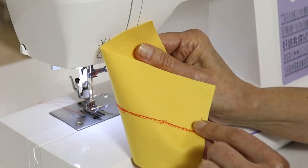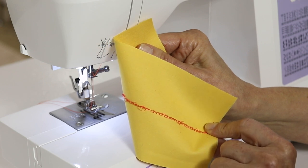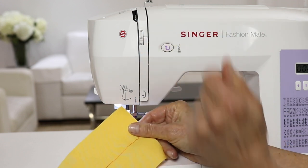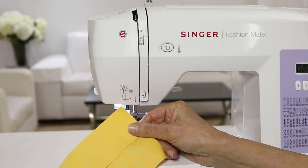When you sew, if the back of your stitching looks something like this, this actually means that your upper thread wasn't threaded correctly. So check your manual or your quick start guide and re-thread your upper thread.